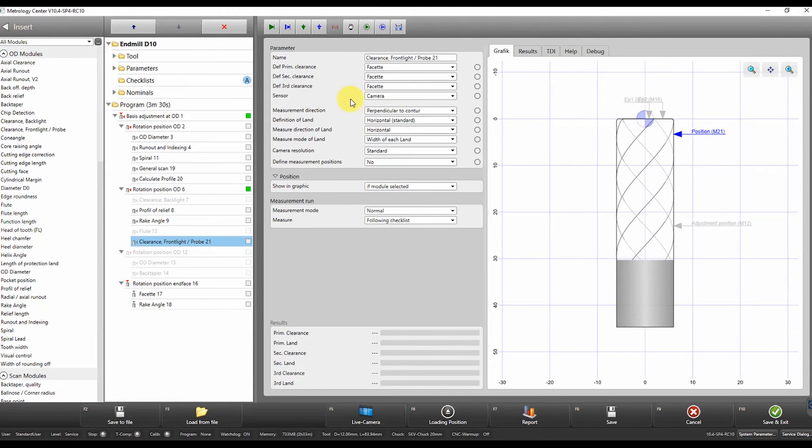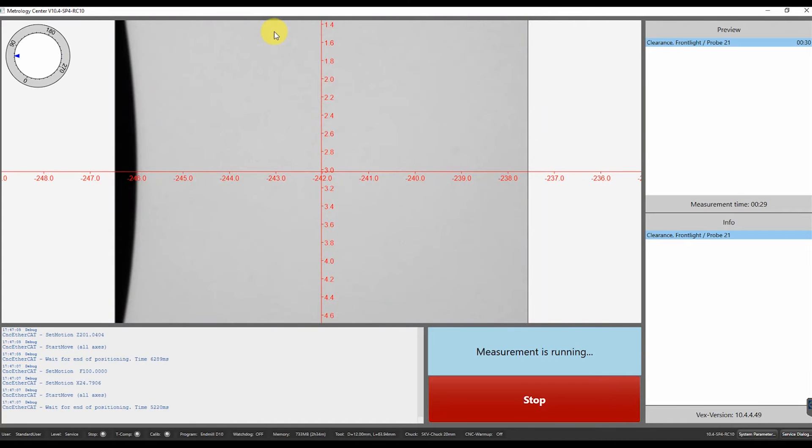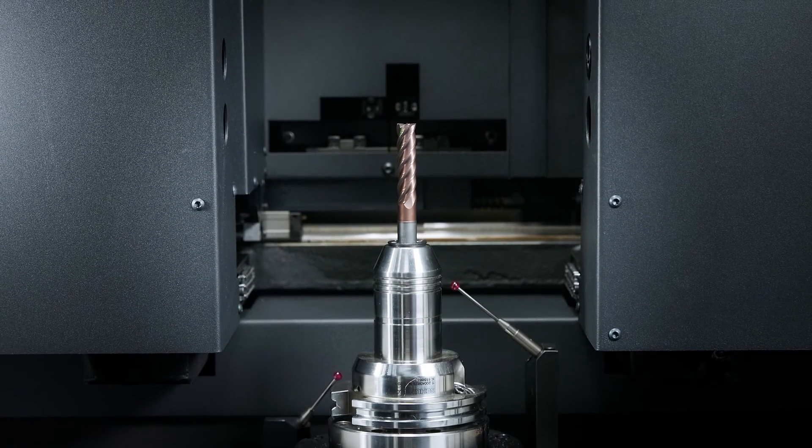As an alternative to the digital probe, it is also possible to use an analog or scanning probe. This provides an analog output signal and is therefore particularly suitable for relative evaluations where the measured value graph is of interest.